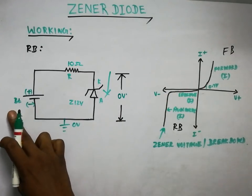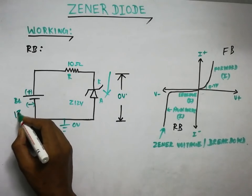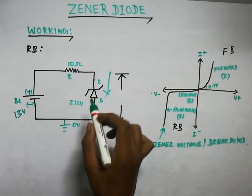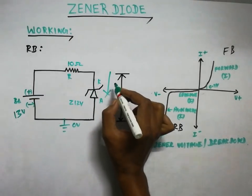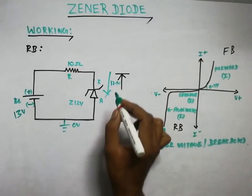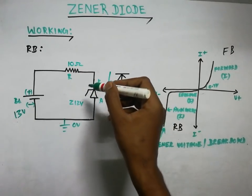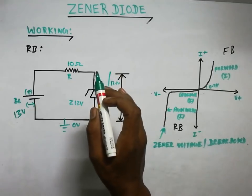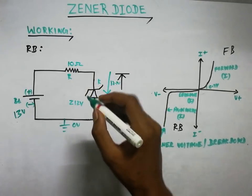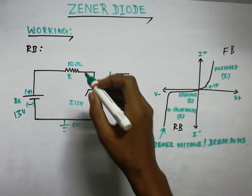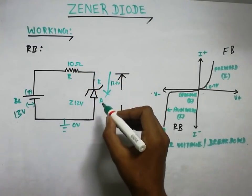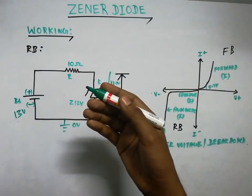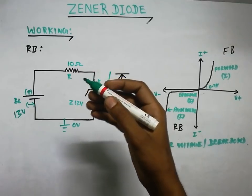Now the input is increased to 13 volts. Since 13 volts exceeds the 12-volt breakdown voltage of the Zener diode, the breakdown occurs. The Zener diode now conducts in reverse. The voltage across the Zener diode is clamped at 12 volts — that is the Zener voltage, or breakdown voltage. Current now flows in reverse through the diode.